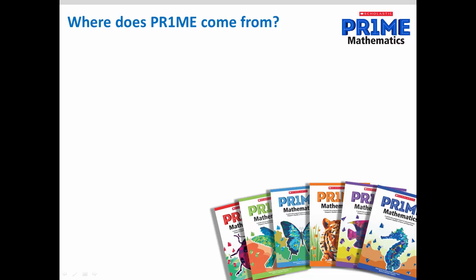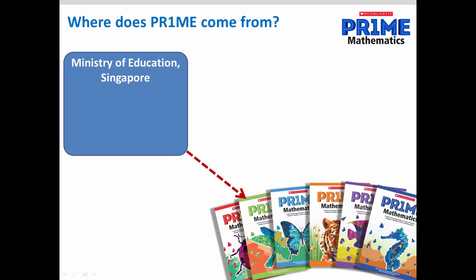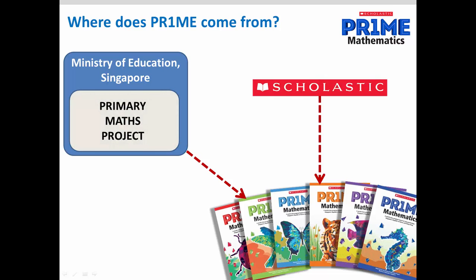Where does Prime come from? Prime is a collaboration between the Ministry of Education in Singapore and Scholastic. The content in Prime is adapted from Singapore's primary mathematics project. This project has been successful in transforming Singapore from an underperforming nation in primary mathematics to being a top performing nation.